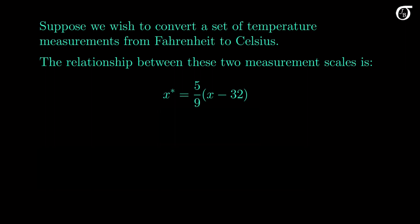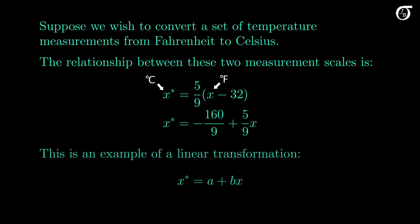Suppose we wish to convert a set of temperature measurements from Fahrenheit to Celsius. Here's the relationship between these two measurement scales: the temperature in degrees Celsius is 5/9 times the temperature in Fahrenheit minus 32. Multiplying through by 5/9, we can write it in expanded form. This is an example of a linear transformation, where we multiply by a constant and/or add a constant.